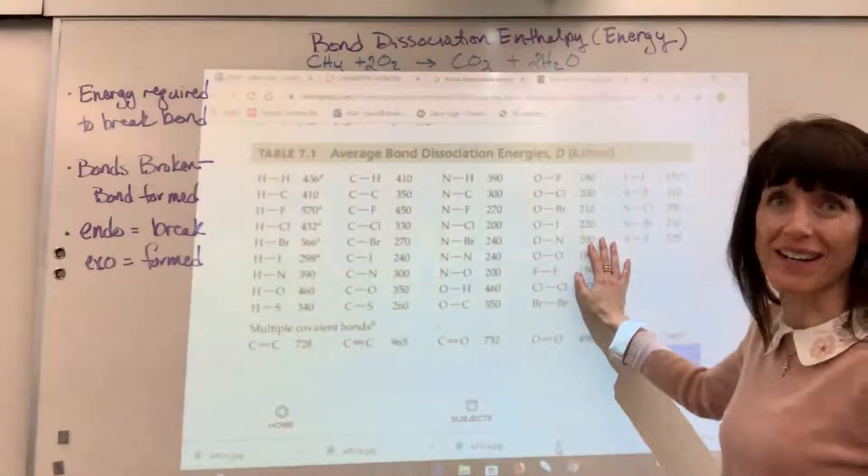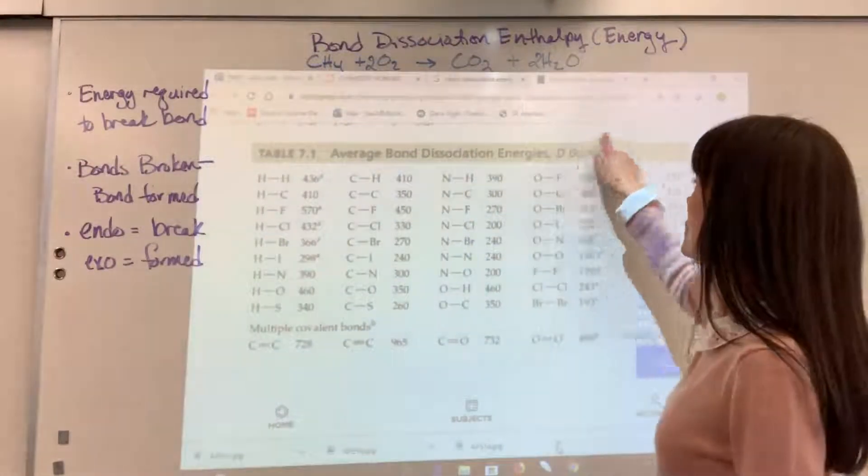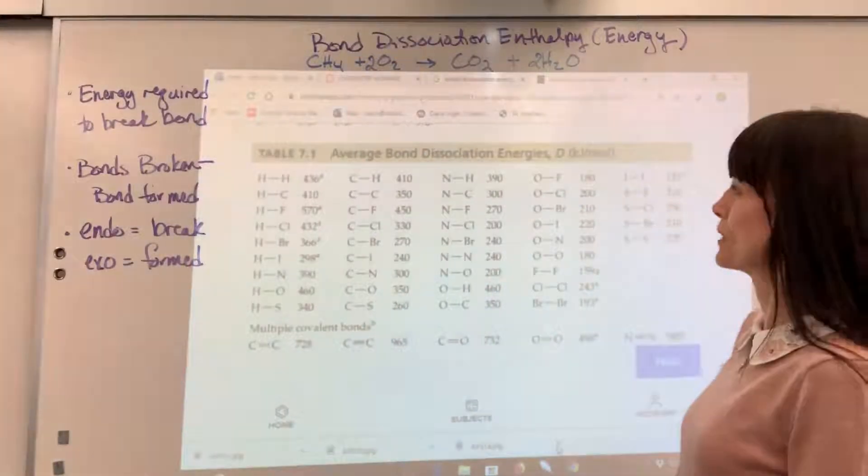Notice what I have up here. This is a table of bond dissociation energies, and it will be given to you in kilojoules per mole. Now, how to read this?